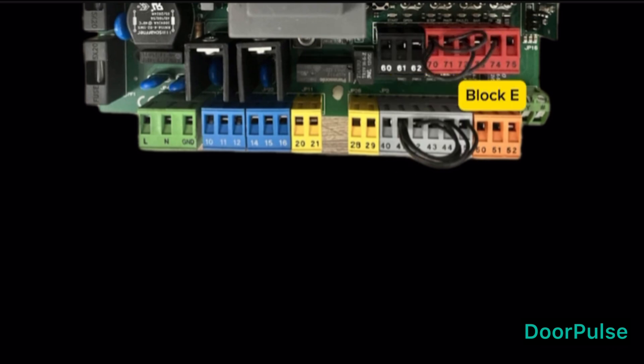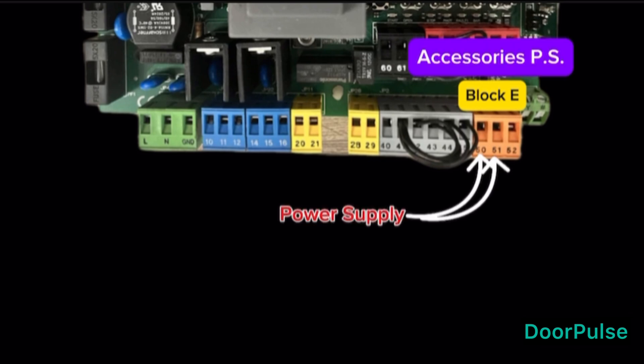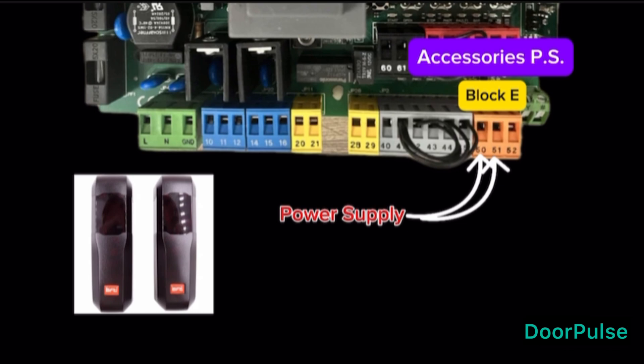Block E, Accessories Power Supply Block. Terminal 50 and 51 is AC power supply. The power supply for photocells. Terminal 51 is 24 volt phase power supply. Terminal 50 is neutral power supply.